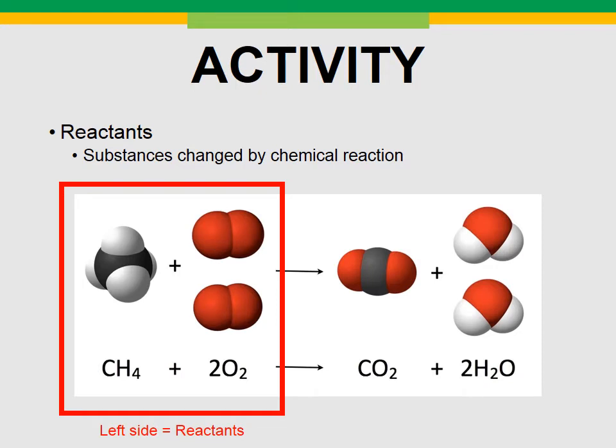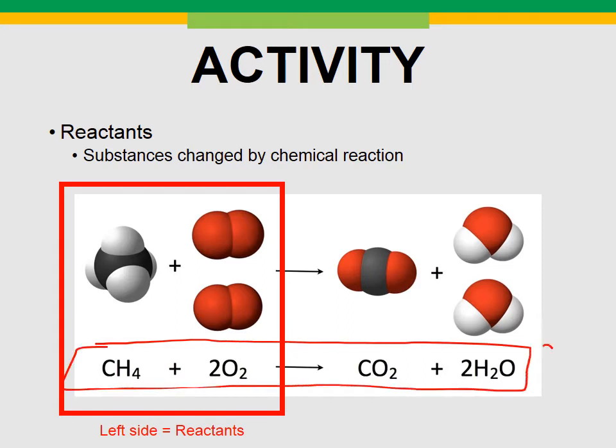Reactants are going to be the things that take part in a chemical reaction — basically the things that work together to cause the chemical reaction. On our example up here on the screen, we have CH4, methane, and two O2 molecules, which is just oxygen gas. When they mix together and experience a chemical reaction, we're going to create two new substances. The left side of every chemical equation — we call that a chemical formula.